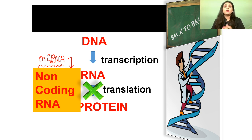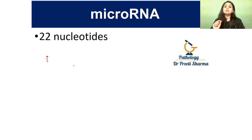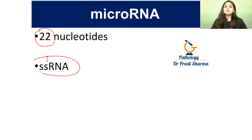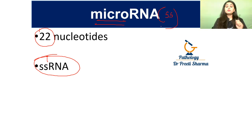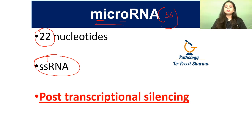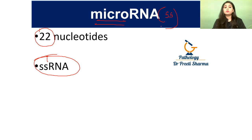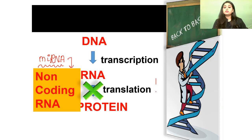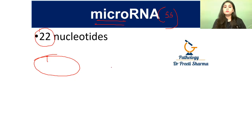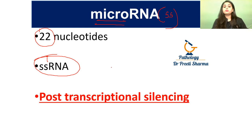Why is it called micro? Because it has only 22 nucleotides — it's a small piece of RNA. It is a single-stranded RNA. So remember: 22 nucleotides, single-stranded, and it causes post-transcriptional silencing. DNA was undergoing transcription to form RNA, but that RNA is not causing formation of a protein — so there is post-transcriptional silencing.